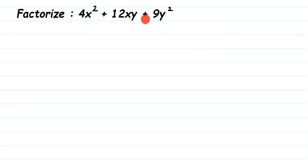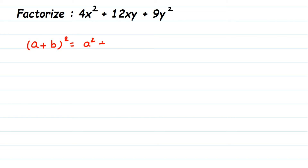How do we identify that we have to use an identity in such a question? First, you can see there are only three terms. In the identities we have three terms too. If you observe, the first term and the last term are actually squares, and all the signs are positive, which means we have to use the first identity: (a + b)². That identity is: a + b whole square = a² + 2ab + b².